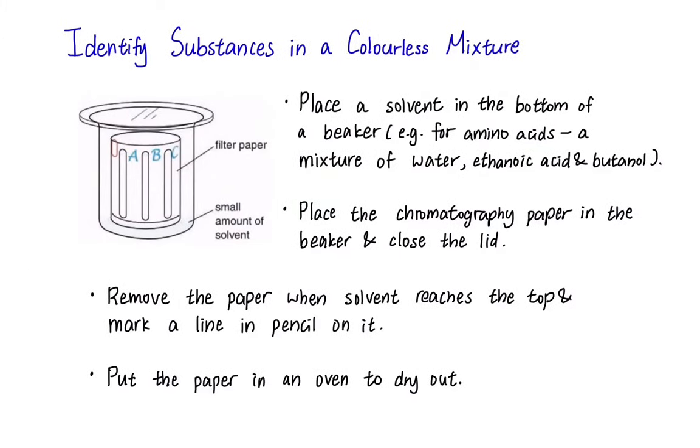Place a solvent in the bottom of a beaker. In this case, we use a mixture of water, ethanoic acid and butanol and roll and place the chromatography paper inside the beaker and cover the top. After some time when the solvent has reached the top of the paper, remove the paper and mark its position with a pencil line. Put the paper in an oven to speed up its drying.